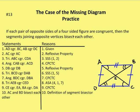In the proof, I have AD congruent to BC and AB congruent to DC — that's given. Then I say AC is congruent to AC by the reflexive property. Now I have two triangles, ABC and CDA, that are congruent by side-side-side, with the sides being AD, AB, and AC.